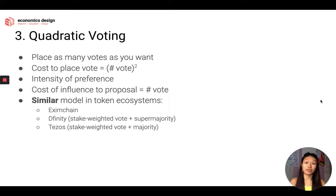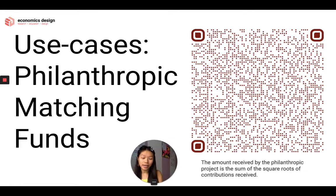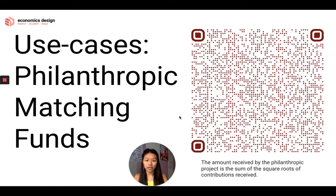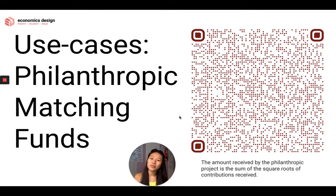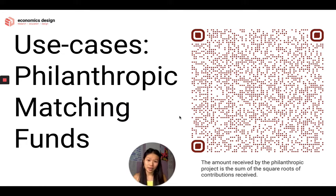One solution is to combine quadratic voting with something else. One example is matching funds, where the amount received by a project is the sum of the square roots of the contributions received. You can scan the QR code and see how it works. Interestingly, a lot of these innovative voting mechanisms are usually first used in funding, donation, and philanthropic activities.